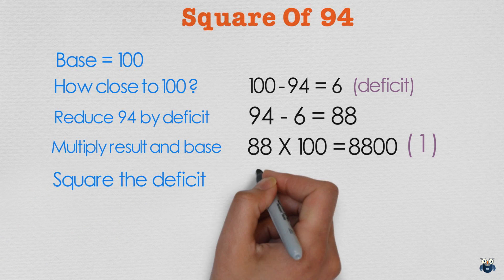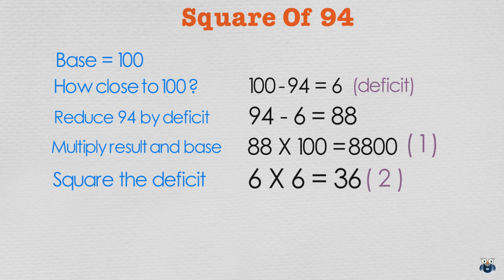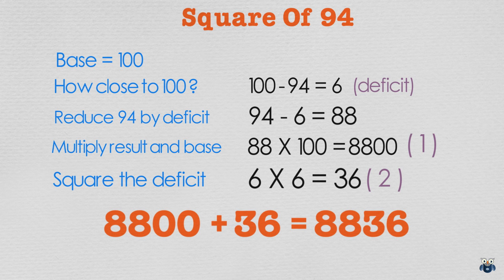We then find the square of the deficit. 6 square is 36. Now to get our final answer, all we do is add both results. 8800 plus 36 is 8836 which is our final answer.